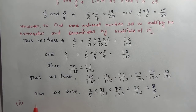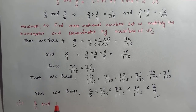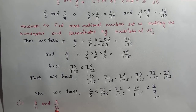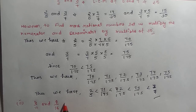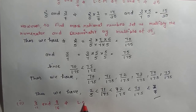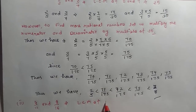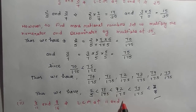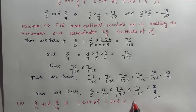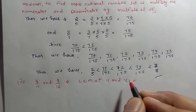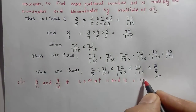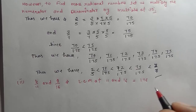Now for the second part, we are given 4/11 and 9/16. We need to find the LCM of the denominators 11 and 16 to calculate a common denominator. Using prime factorization, the LCM of 11 and 16 is 176.